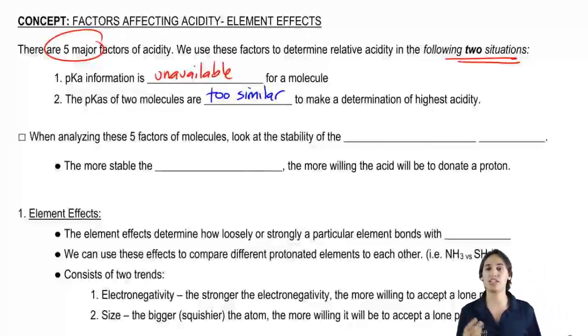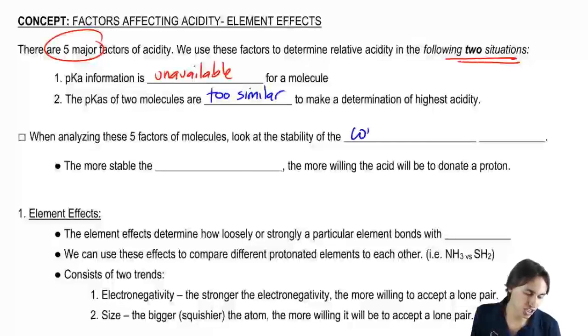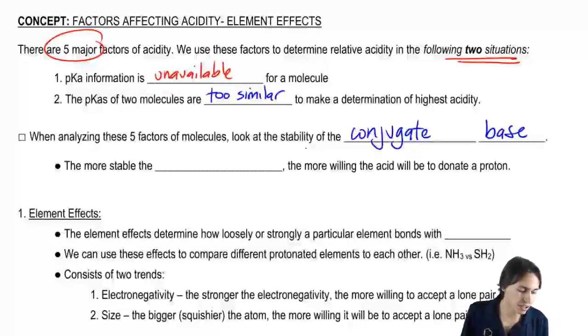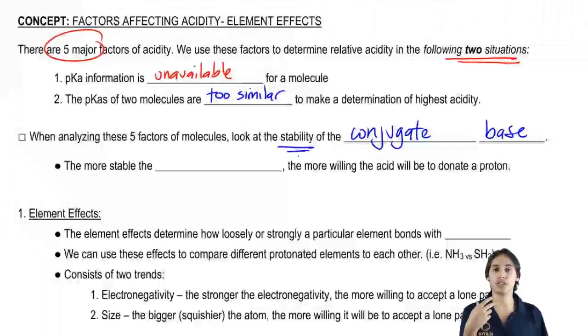So whenever we're analyzing these five different factors, what we're going to do is instead of looking at the acid, we're actually going to look at something else and that's going to be the stability of the conjugate base. How does this work? Well, the reason we look at the stability of the conjugate base is because that's going to tell us how willing the molecule is to give away a proton.